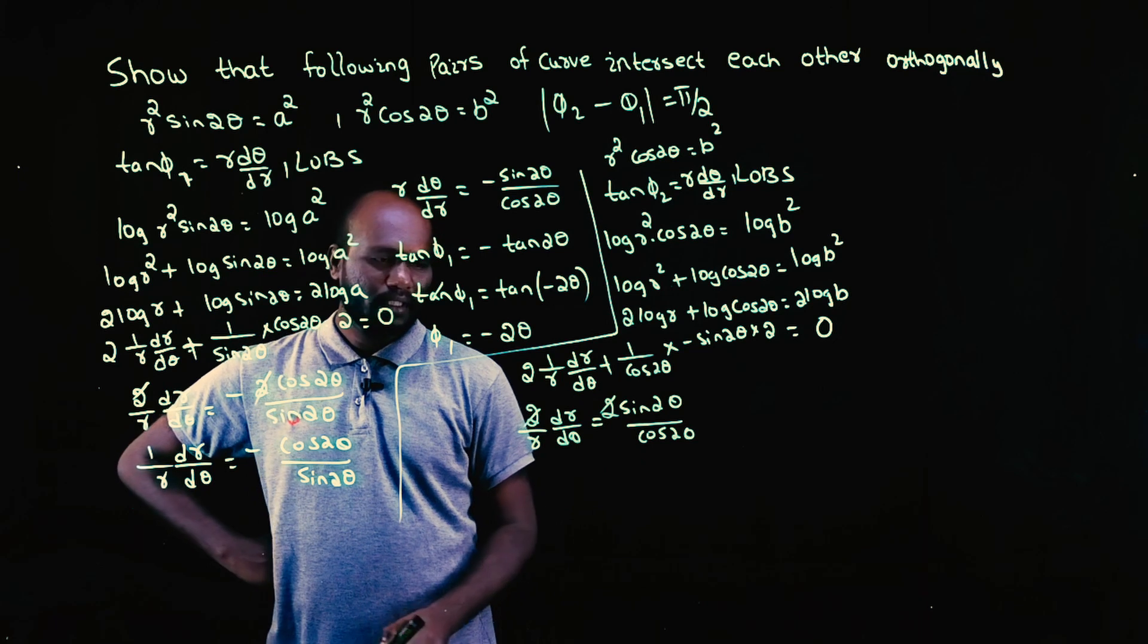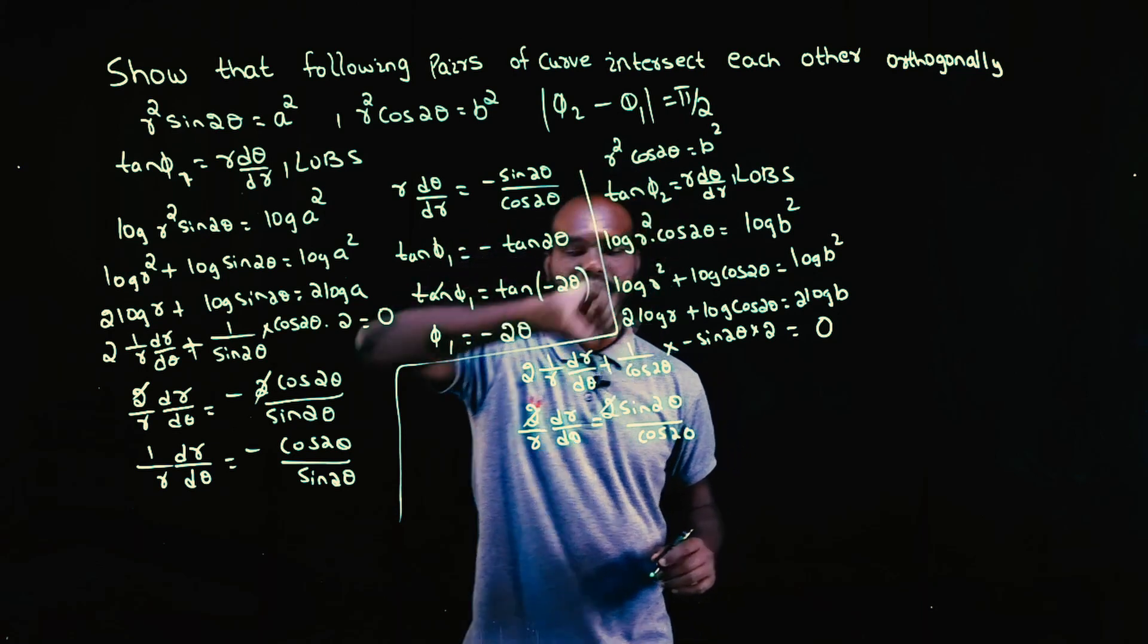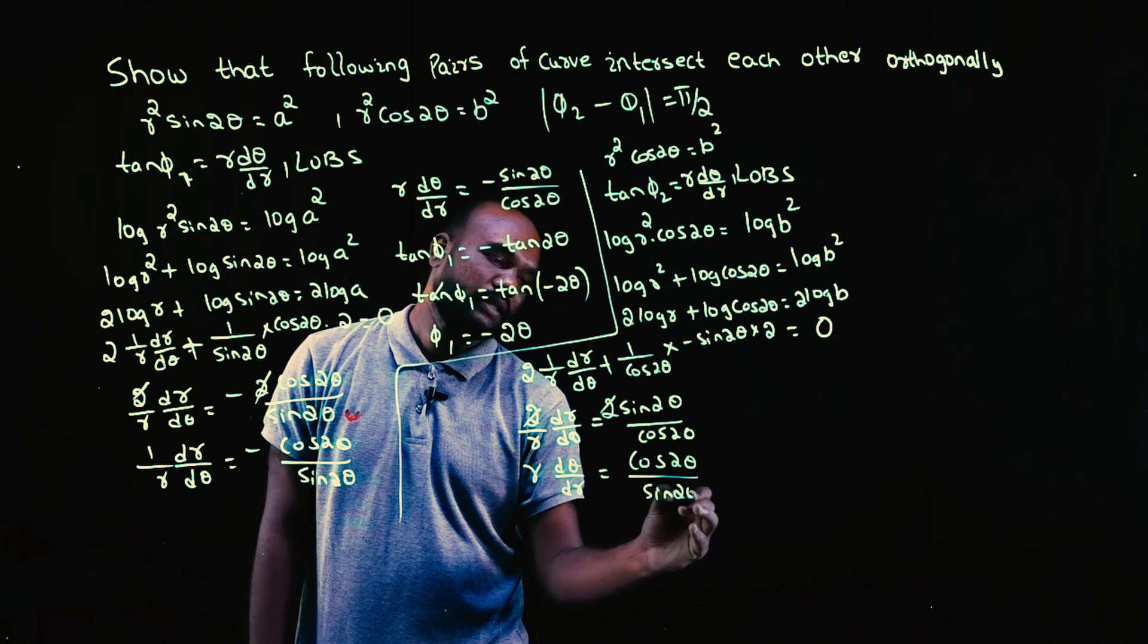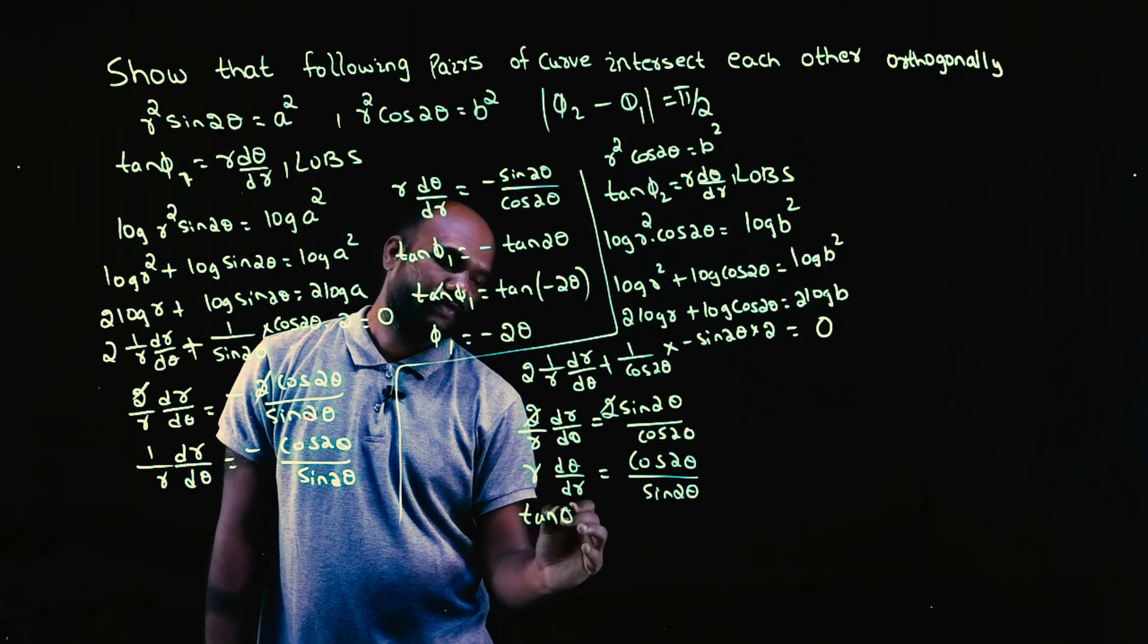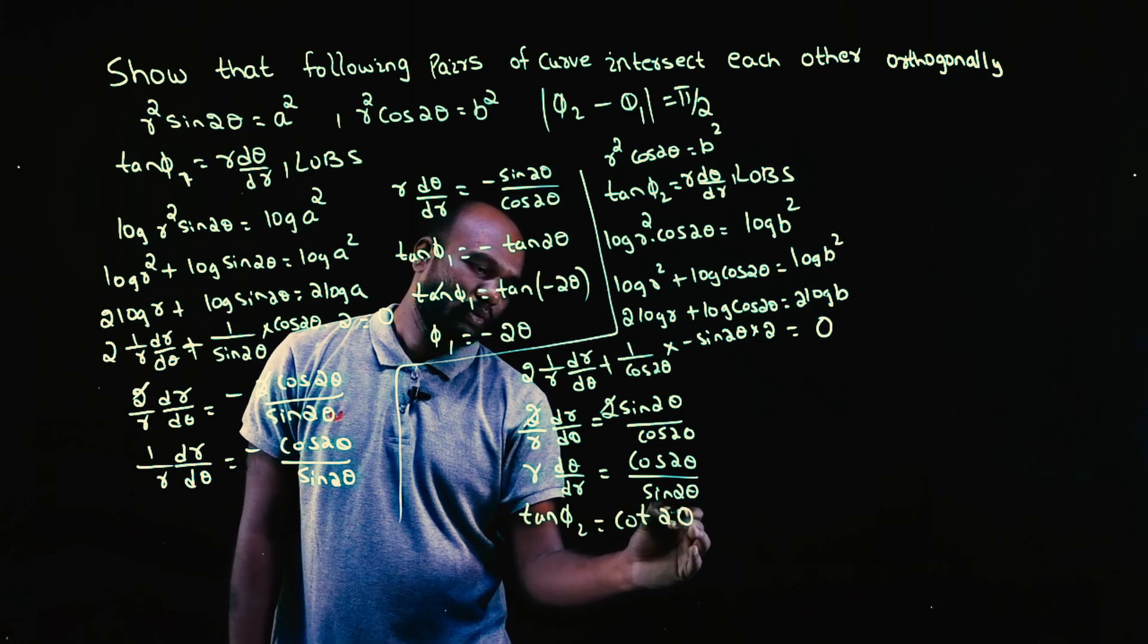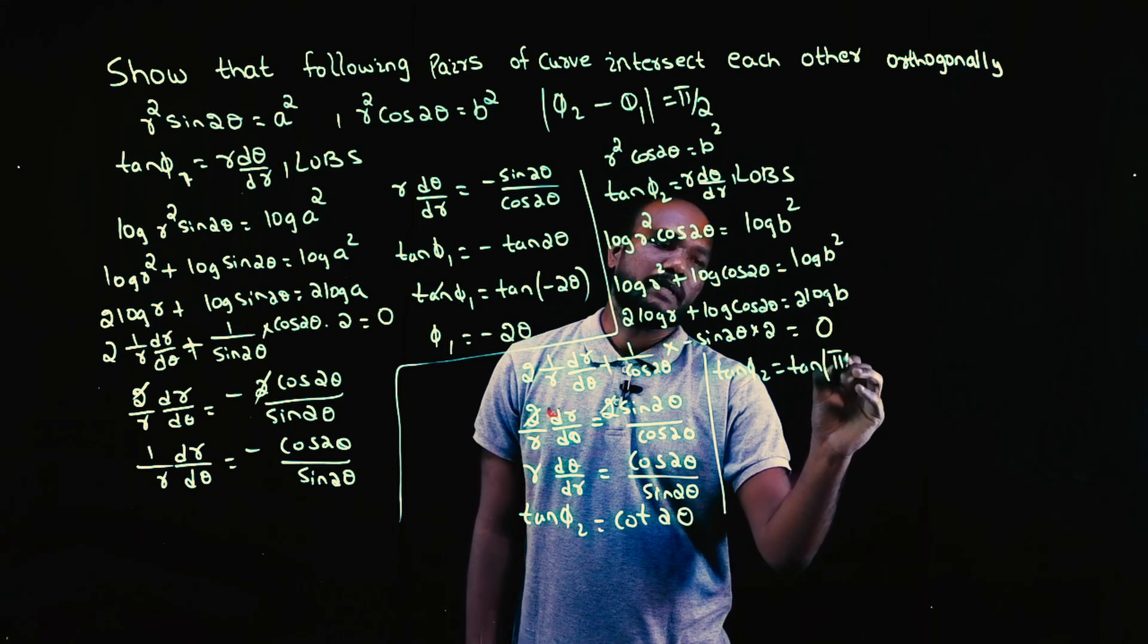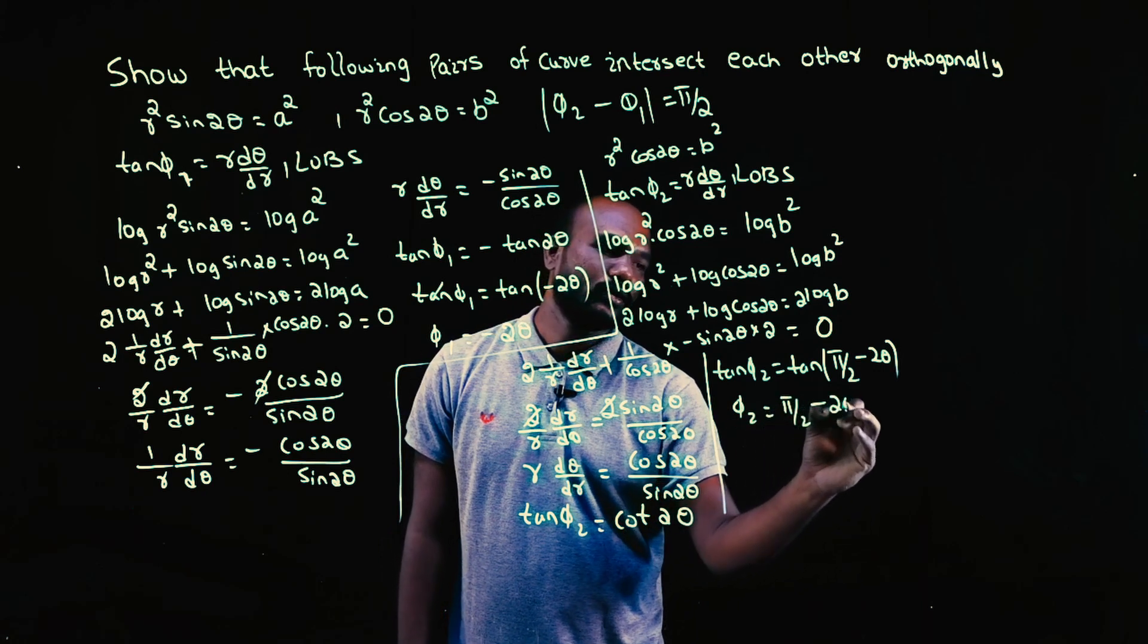I can take 1/2 out. I have 1 by r dr by dθ, but I do not want 1 by r, I need r in the numerator. So just flip it, this also will flip, dθ by dr. Cos 2θ will go up, cos 2θ by sin 2θ. Again, r into dθ by dr is what? Tan φ2. So tan φ2 is equal to cos by sin is what? Cot 2θ. So now what can I write? Tan φ2 is equal to tan of π by 2 minus 2θ. Tan tan can be taken out. φ2 is π by 2 minus 2θ.